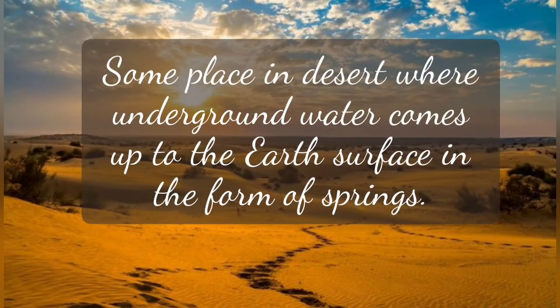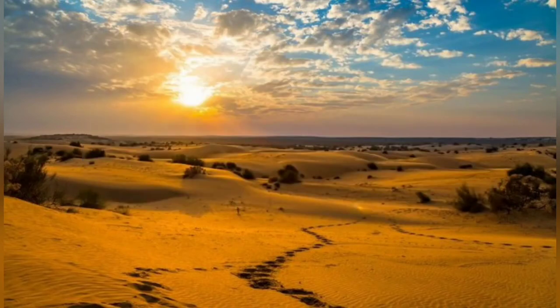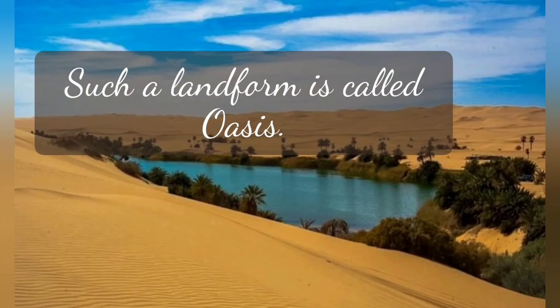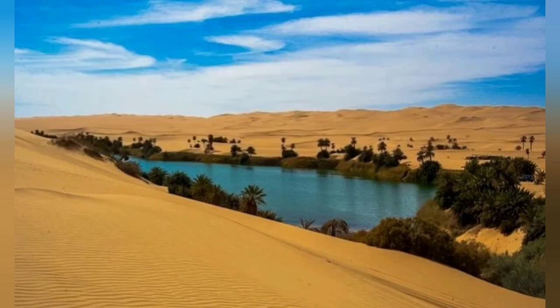There are some places in the desert where underground water also comes up. Even though it does not rain here, during the springs what happens is that underground water comes to the surface and gets collected on the surface of the earth. That landform is called an oasis. This is not a man-made swimming pool — it is natural underground water which comes up to the earth's surface and collects in that area. This kind of landform is called oasis, which is found only in sandy deserts.